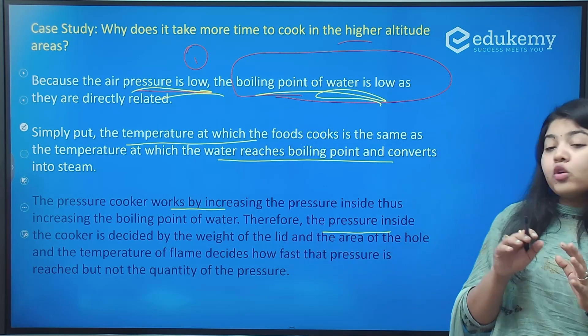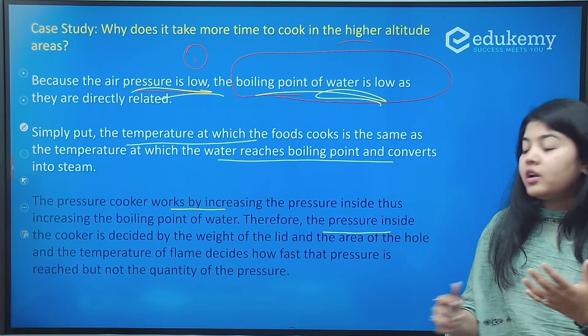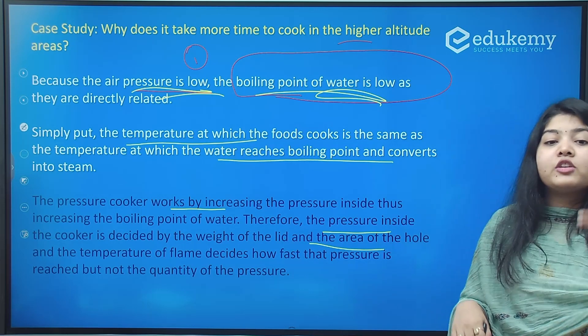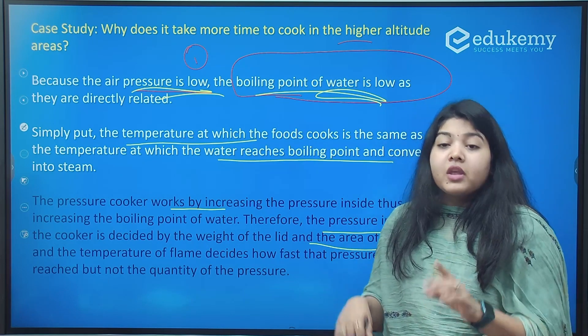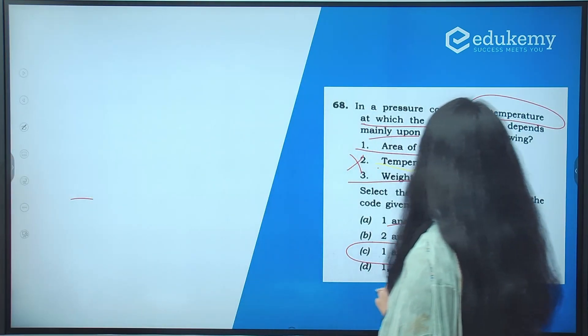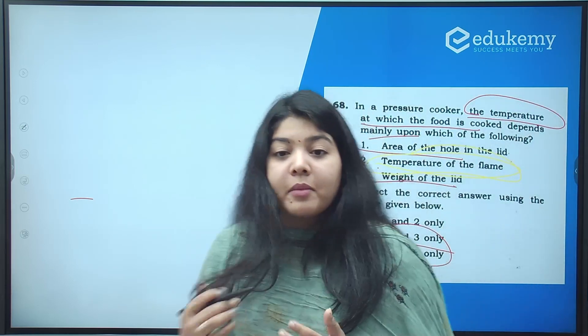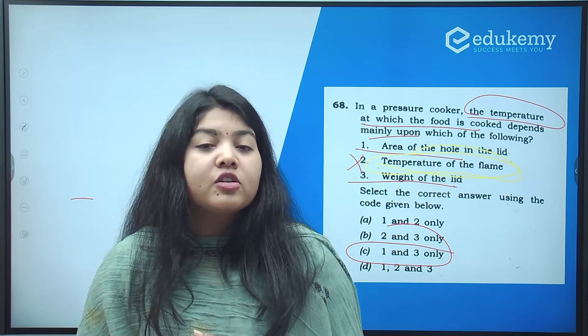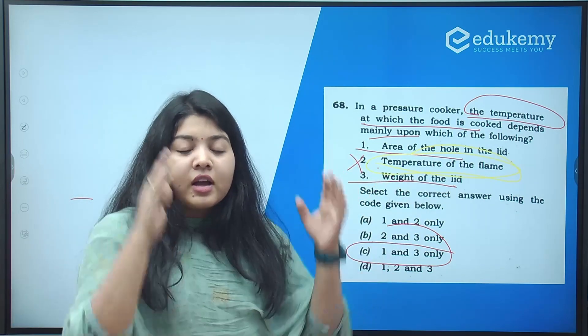The pressure cooker also works by increasing the pressure inside, increasing the boiling point of the water. Therefore the pressure inside the cooker is decided by the weight of the lid because it is trying to create a pressure, and the area of the hole. The temperature of the flame decides how fast the pressure is reached but not the quantity of the pressure. So this is why this answer is correct - this cannot be the determining factor.